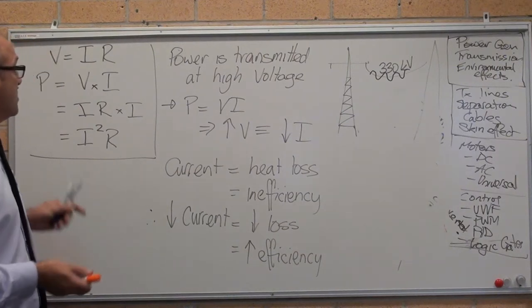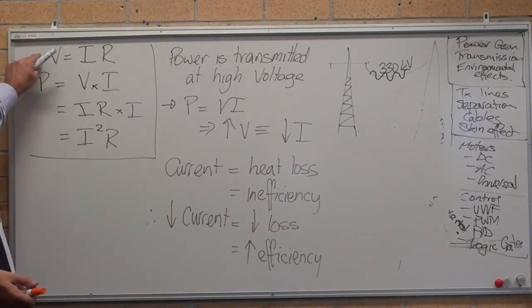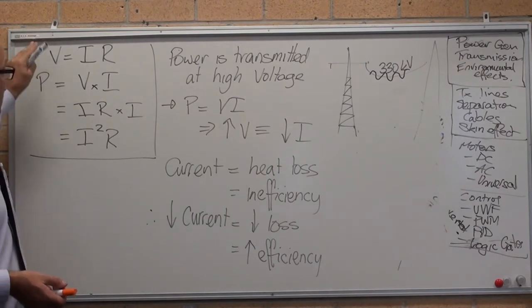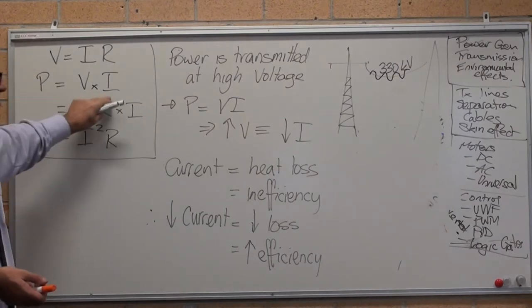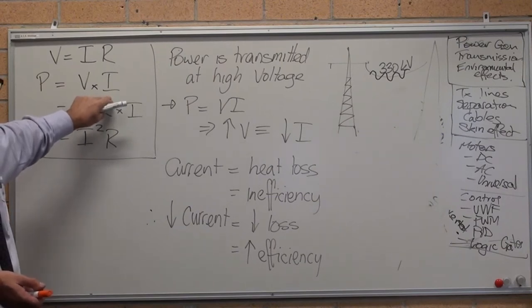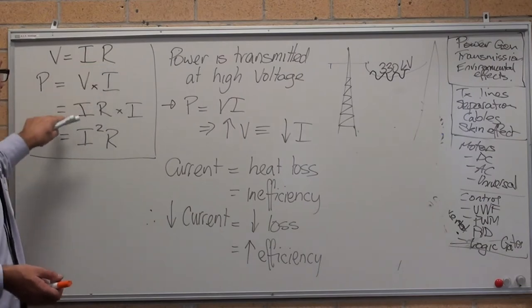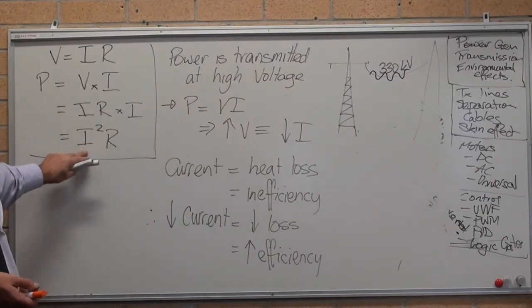The power, they've got to transmit it. Voltage, as you know, is current times resistance. Power is voltage times current. They're your two basic formulas. Because voltage is current times resistance, power also equals I squared R.